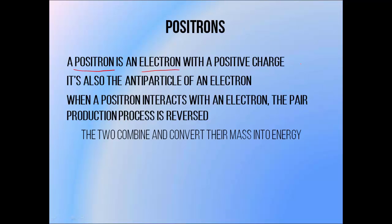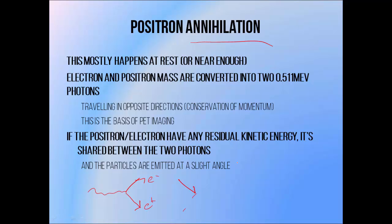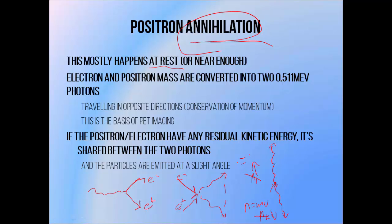A positron is a positive electron — the two have the same mass but an opposite charge, and a positron is the antiparticle of an electron. When the two combine, they go through something similar to the reversal of pair production: the electron and positron both convert their energy into photons. In pair production, one photon comes in and an electron-positron pair comes out. When the process is reversed — known as positron annihilation — an electron-positron pair goes in and two photons come out. There are two photons because of the law of conservation of momentum. Electrons and positrons tend to annihilate when both particles are pretty much at rest, so the two photons are emitted in exactly opposite directions, their momentum cancels out and adds to zero. Both photons will also have an energy of 0.511 MeV, equivalent to the electron and positron mass energy.